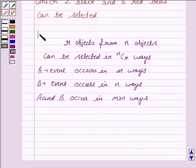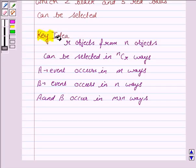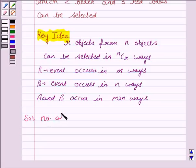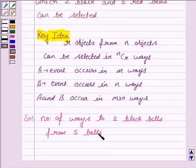This knowledge is the key idea. Let us now move on to the solution. We have to select 2 black and 3 red balls from 5 black and 6 red balls. So, the number of ways to select 2 black balls from 5 balls is equal to 5C2.